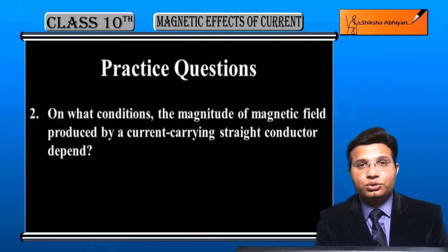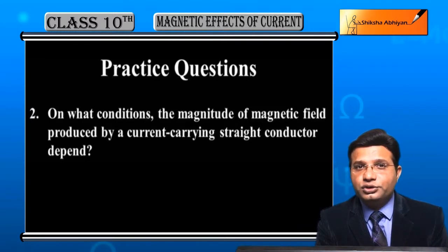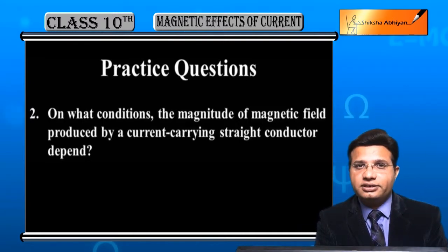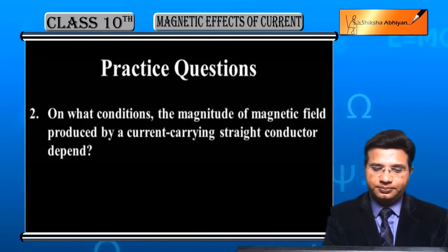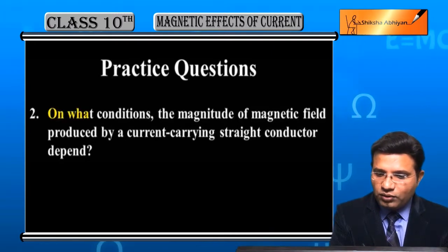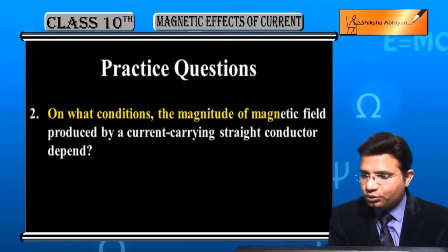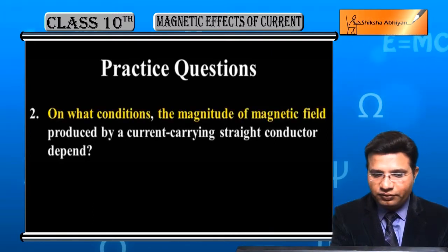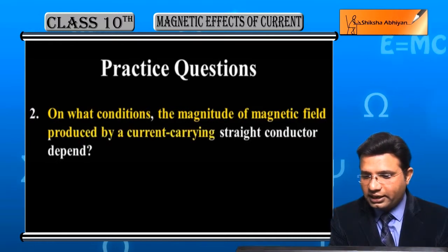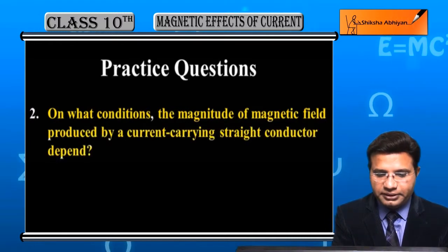Now question number 2 on the concept of magnetic field due to a current-carrying straight conductor. On what conditions does the magnitude of the magnetic field produced by a current-carrying straight conductor depend?